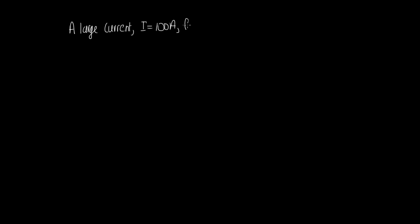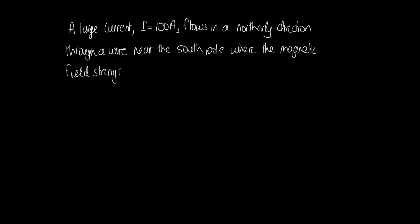a large current, I equals 100 amps, flows in the northerly direction through a wire near the South Pole where the magnetic field strength is 65 times 10 to the minus 6 Teslas directly upwards. What is the force per unit length on the wire?